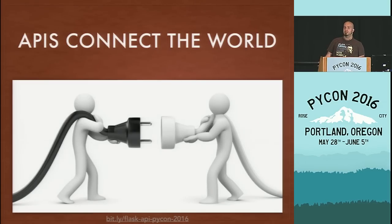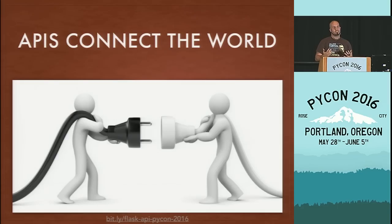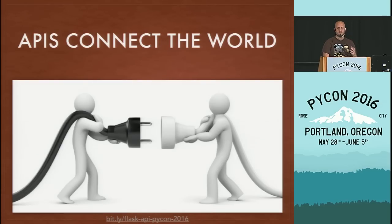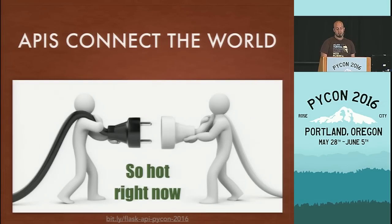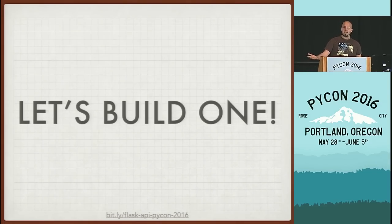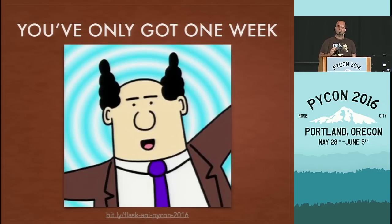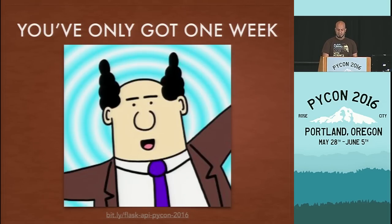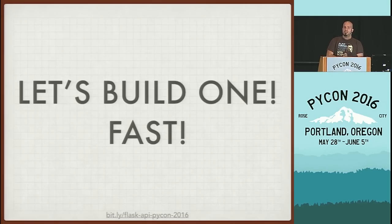I assume that if you're here, you already know more or less what an API is and you know why they're really cool. They allow different companies and different people to mash up different pieces of information together and build some really cool results out of the blend. And they're so hot right now. So given all that, let's learn how to build an API — really, really fast.